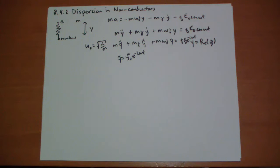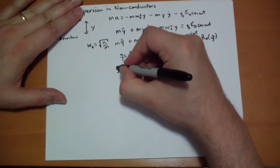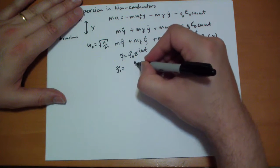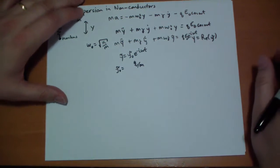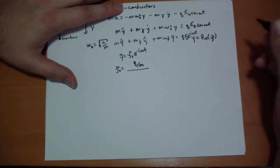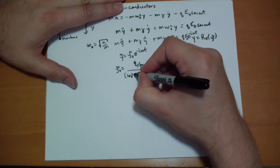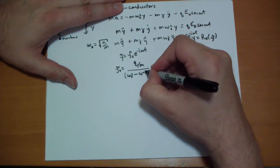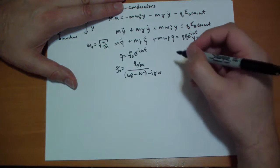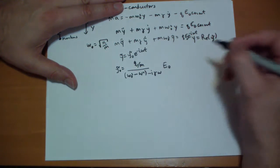When we plug this in to this thing up here, we get Y naught has to be equal to Q over M, Q is the charge of the electron, divided by omega naught squared minus omega squared minus I gamma omega times E naught.